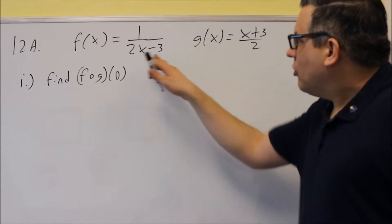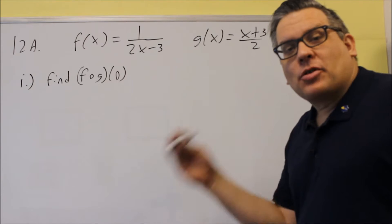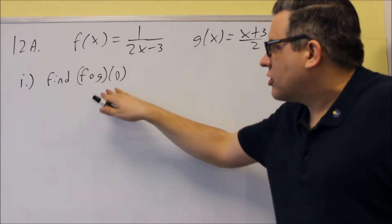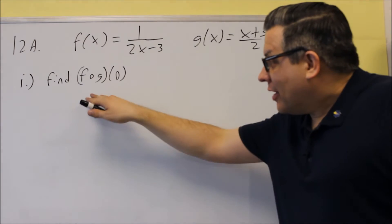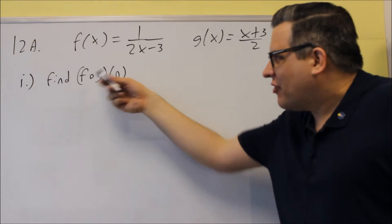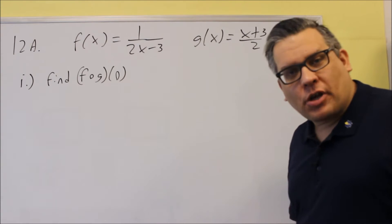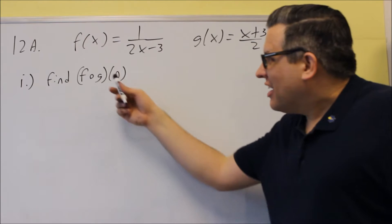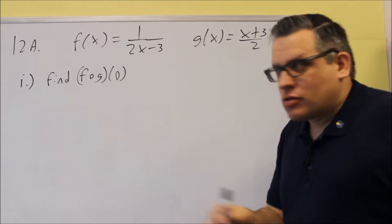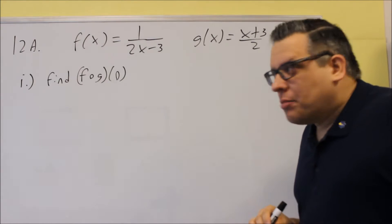For number 12, we have composition functions we're working with. You want to make sure you understand what this means by using the definition. First of all, f of g does not mean f times g — you're not doing multiplication. It actually means you're putting something into something else; you're putting a function into another one.